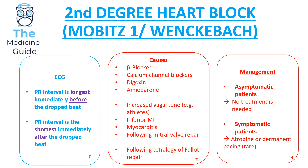The key things to remember are that Mobitz type 1 and Wenckebach are terms used interchangeably. The mnemonic is 'longer, longer, longer, drop — that is a Wenckebach' to identify the ECG features. Only symptomatic patients are offered treatment, and the treatment is usually atropine or, in very rare cases, permanent pacing.